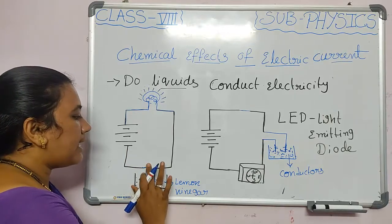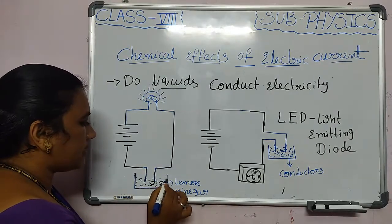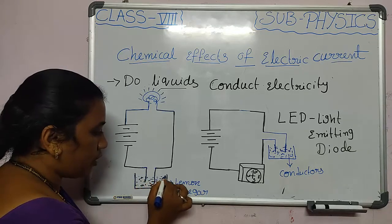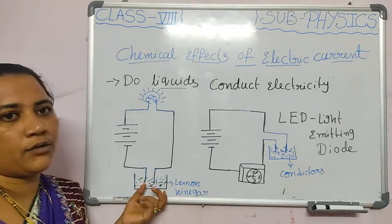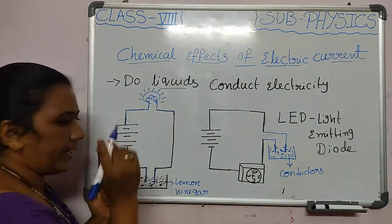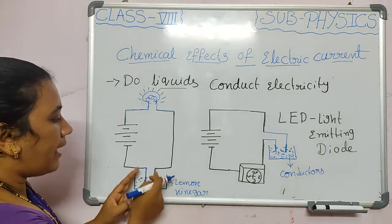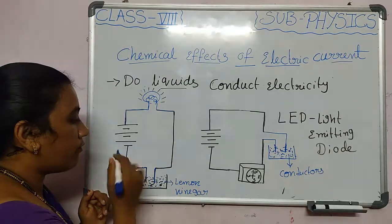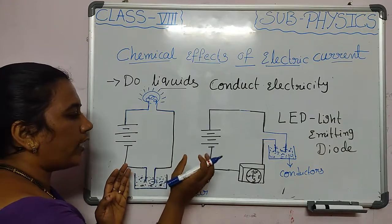Now to understand liquid conductivity, we take a small plastic cup and fill it with a solution — like lemon solution or vinegar. We then insert the two wires into this liquid. This makes a closed circuit. Our role here is to determine whether the solution is a conductor or an insulator.